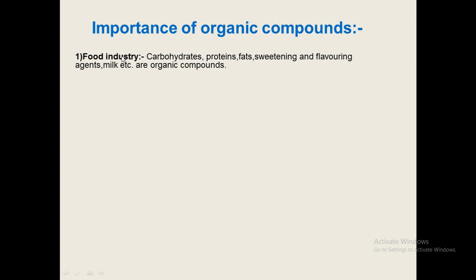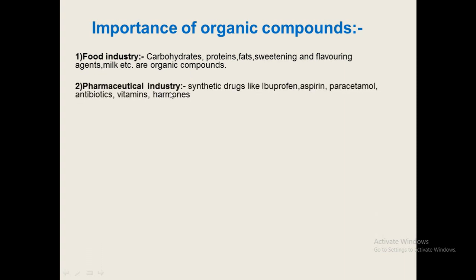In the food industry, our diet mainly contains carbohydrates, proteins, fats, then sweetening and flavoring agents, milk, etc. All are organic compounds. In the pharmaceutical industry, organic compounds are useful in preparation of medicines, synthetic drugs. Medicines like ibuprofen, aspirin — tablets that control body temperature — then paracetamol, antibiotics, vitamins and hormones. All contain organic compounds.